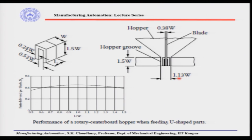The blade width could be 0.38w, and the space within which the blade comes along with the part will be 1.13w, because the part on the blade has dimension w, so the space on both sides is 1.13w divided by 2, and the height is 1.5w. There is a curve showing parts delivered per blade depending on the L-by-w ratio of the part; on average delivery is quite low — no more than one or two parts at a time.